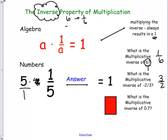And then the inverse of 6 would be 1 sixth. The inverse of negative 2 thirds would be 3 halves, but we want it to be 1. And a negative times a positive equals a negative. So if we wanted the inverse, it would have to be negative. What would be the inverse of 0.7? We would change the decimal to a fraction, and the inverse of that would be 10 sevenths.